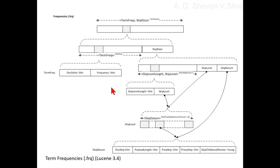For the first term, since the frequency is 1, the frequency information is encoded in the delta itself. Doc ID delta equals 7 and the binary is 00000111. Since we want to store the frequency of 1 in the doc delta, the last bit of the doc delta is 1. Doc ID delta is odd, so we know that the frequency is encoded in the doc delta and freq equals 1.